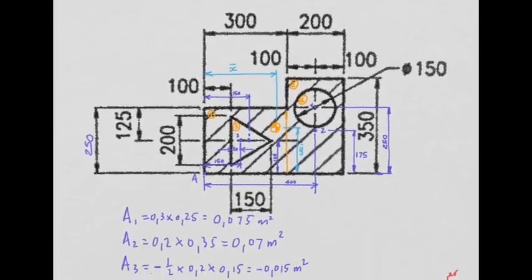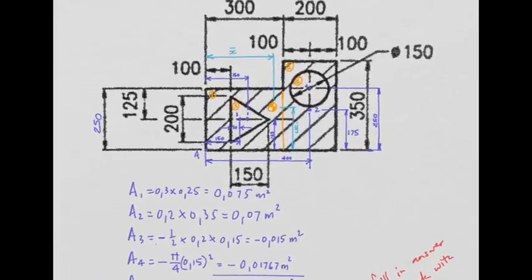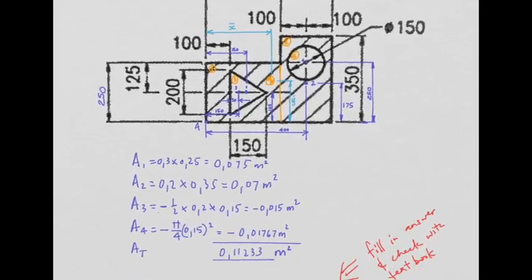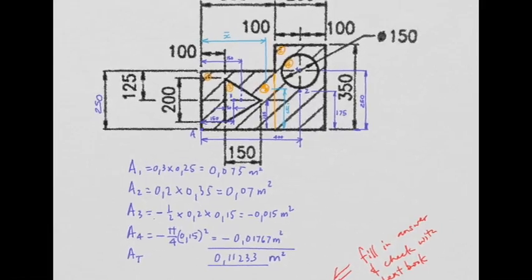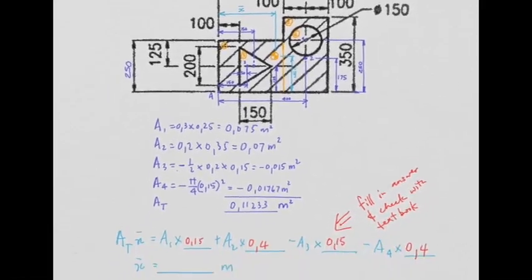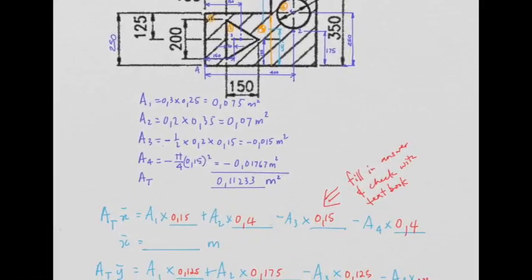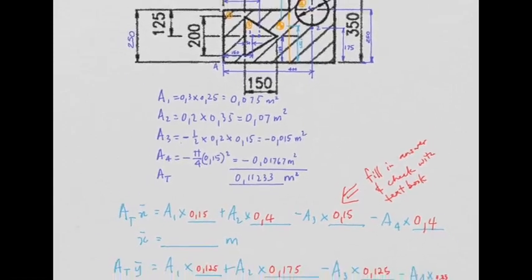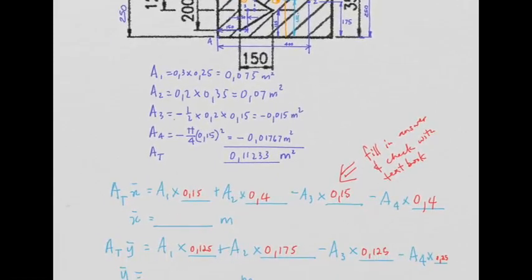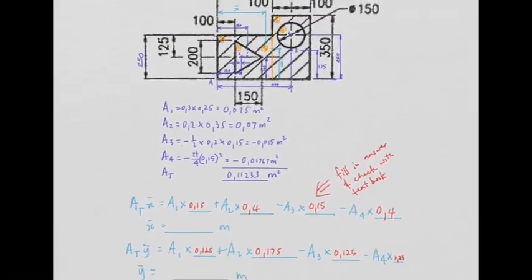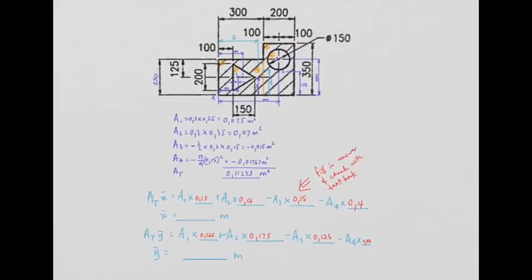So when you work out areas, I want you to do this yourself, you're going to have area one and two as normal positive numbers, and three you place a negative sign, and four you place a negative sign, which will give you the correct area. And that's all you really have to do, other than also ensure that this is negative and this is negative to remove the effect of those cutouts, and you're going to get your two answers for x̄ and ȳ. So give that a go.